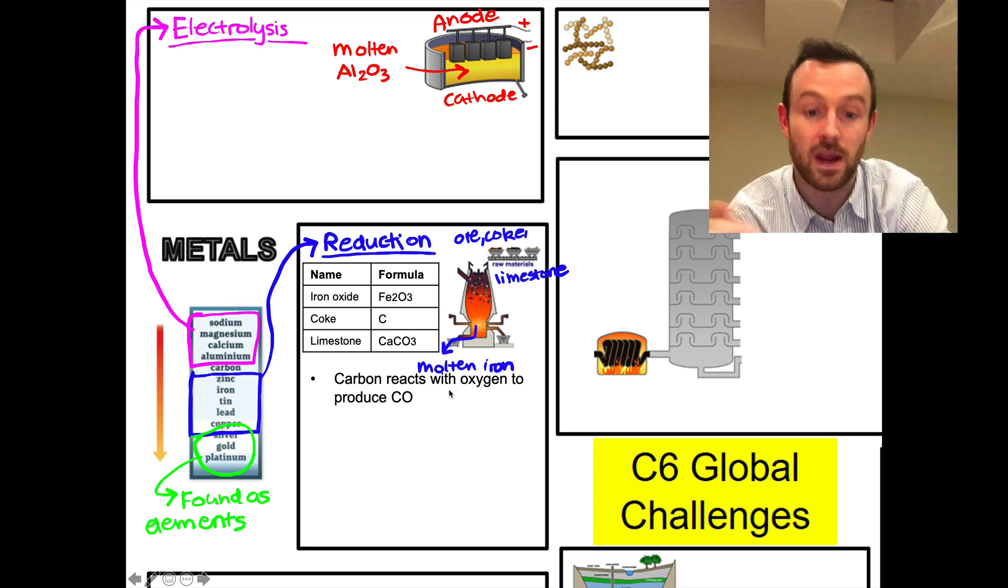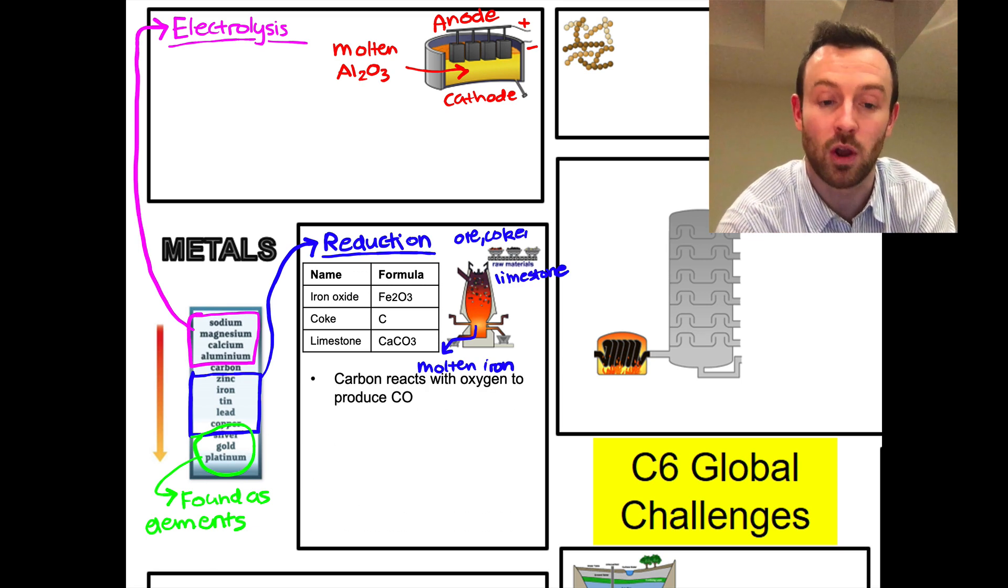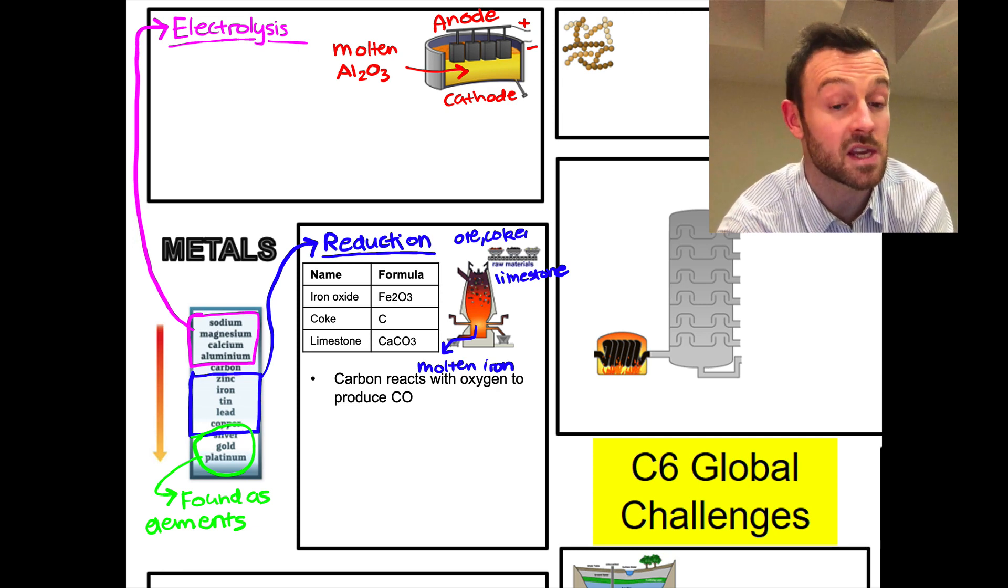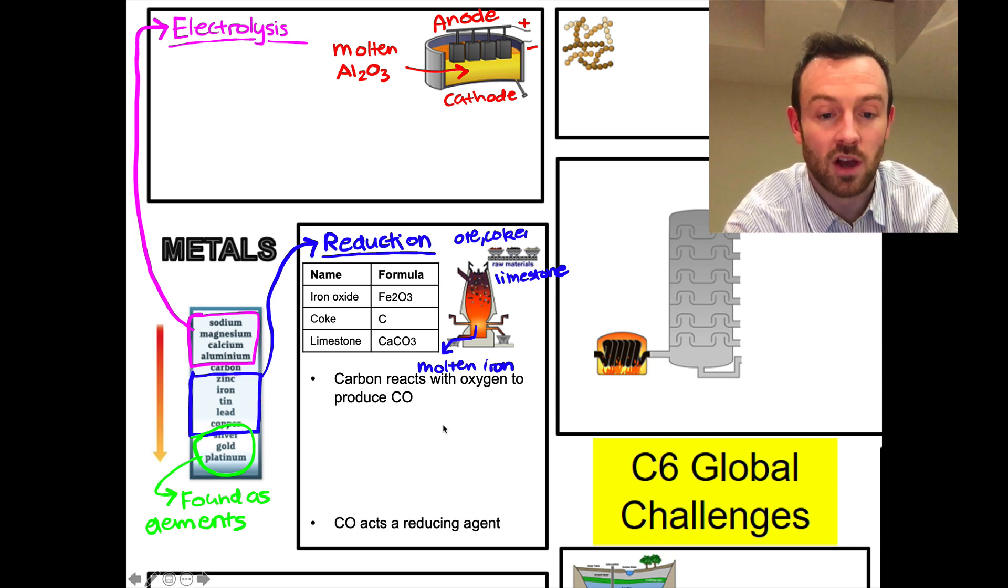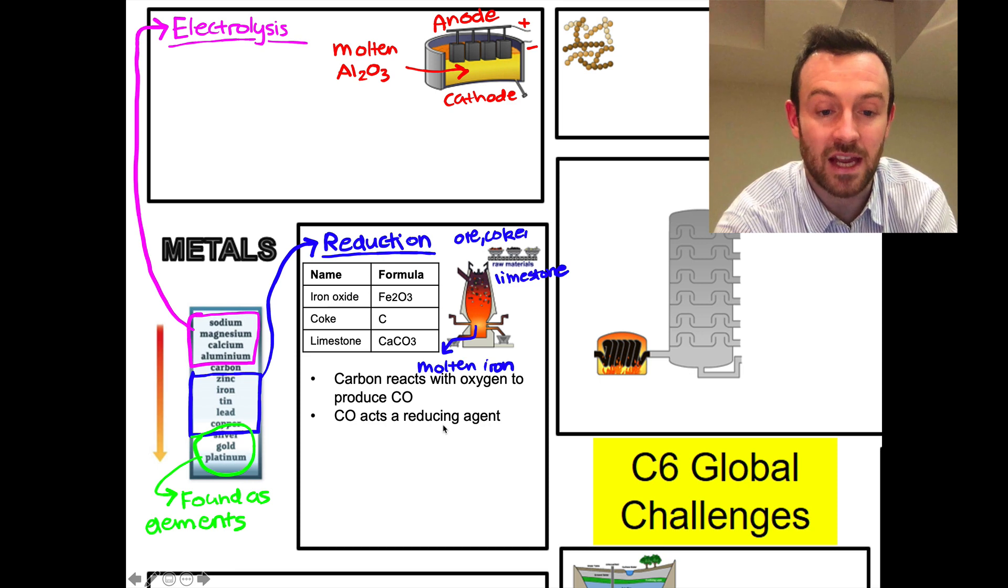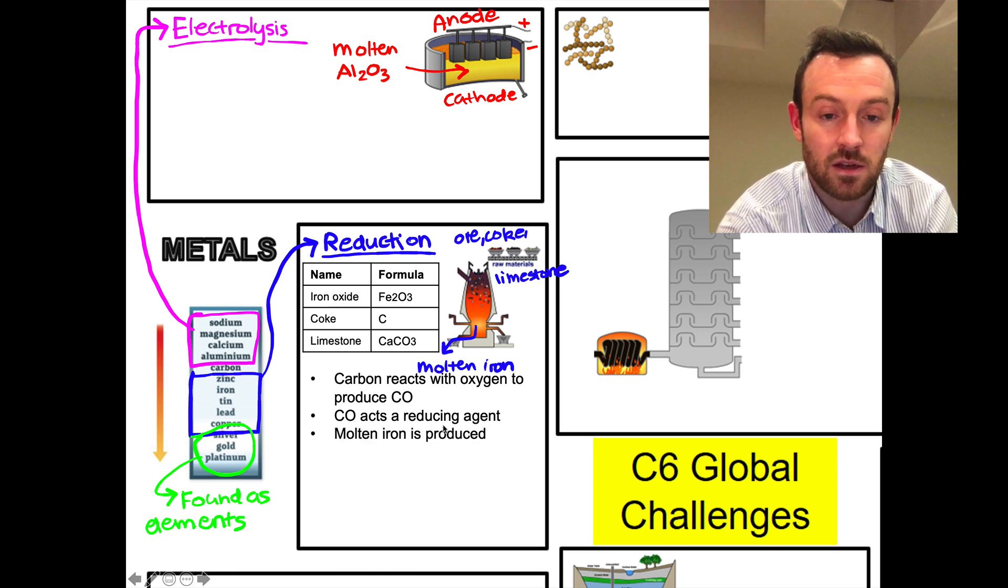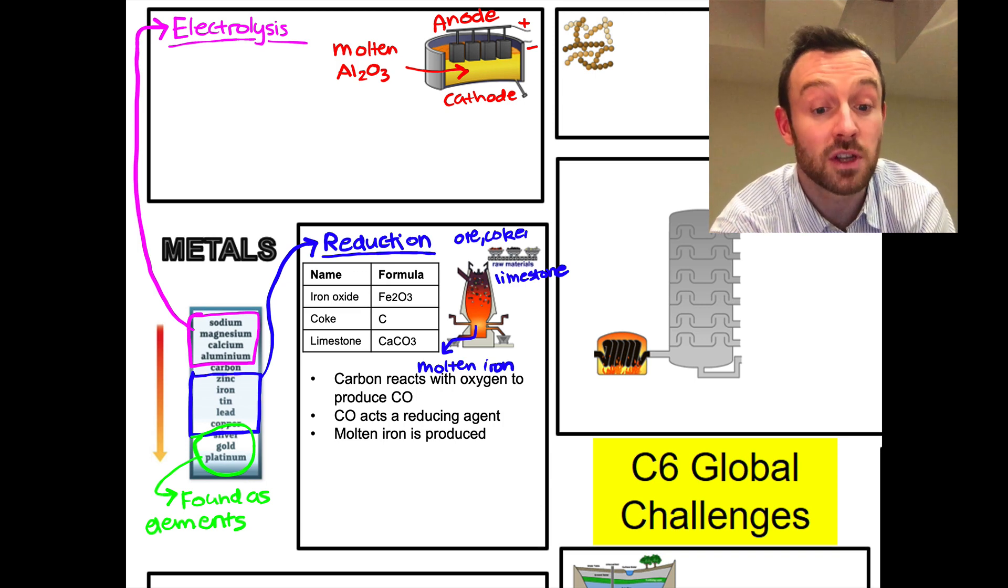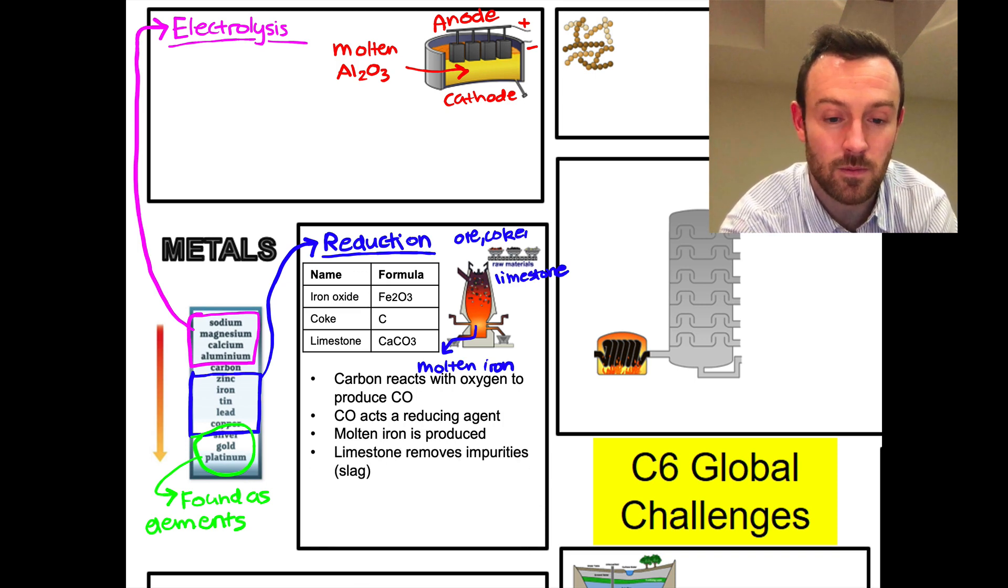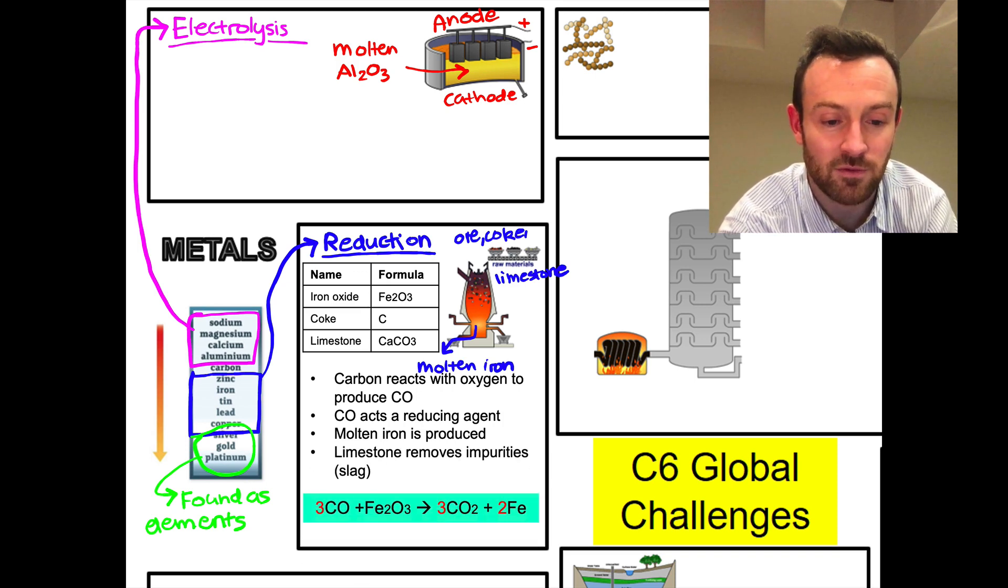We put all those into the furnace, and in the furnace what happens is carbon reacts with oxygen to produce carbon monoxide, CO. Not CO2, but CO. That carbon monoxide acts as a reducing agent, which means that it can take away the oxygen from the iron oxide, leaving molten iron that is produced. So the overall equation for that process is shown here: carbon monoxide plus iron oxide goes to carbon dioxide plus Fe, and I've added these red numbers here to balance that equation.